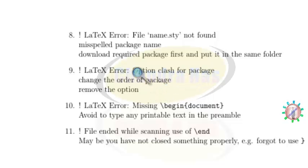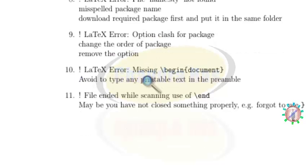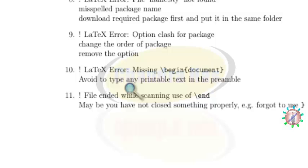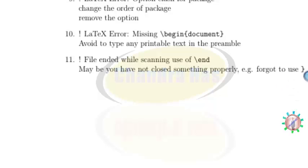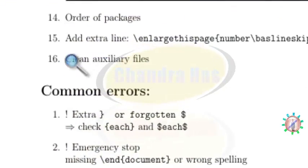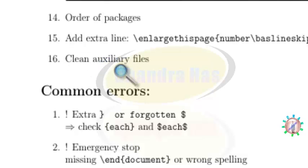For a package clash, change the order of packages or remove a conflicting option. 'Missing begin document' means you have printable text in your preamble — remove it. The error 'file ended while scanning' means you have not closed something properly, such as a forgotten closing curly bracket.